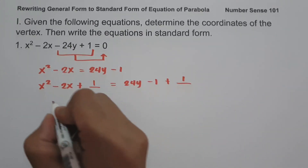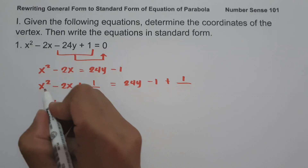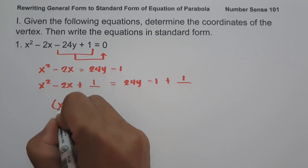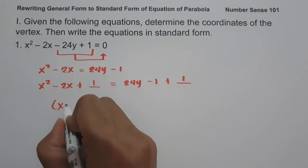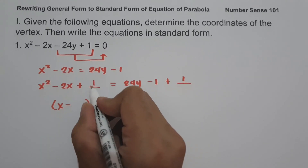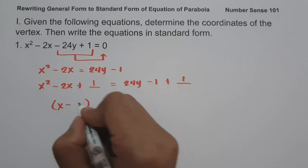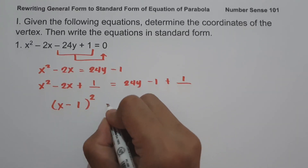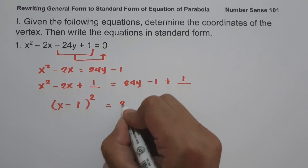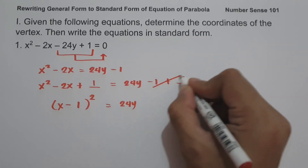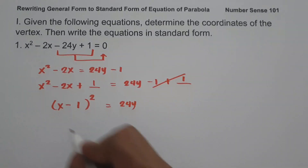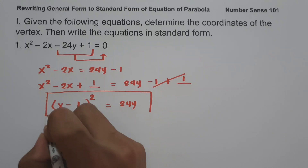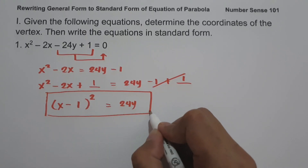Let us factor this one. The square root of x² is x, the sign of the middle term is negative, and the square root of 1 is 1, so we have (x - 1)². Then we have 24y, and after canceling we get our standard form of the equation of a parabola.